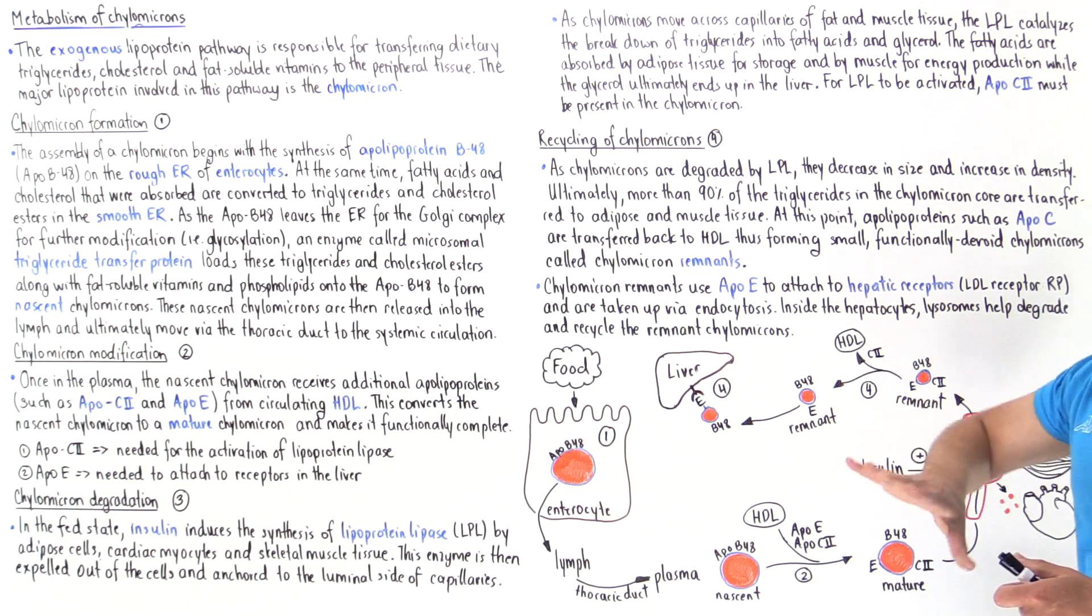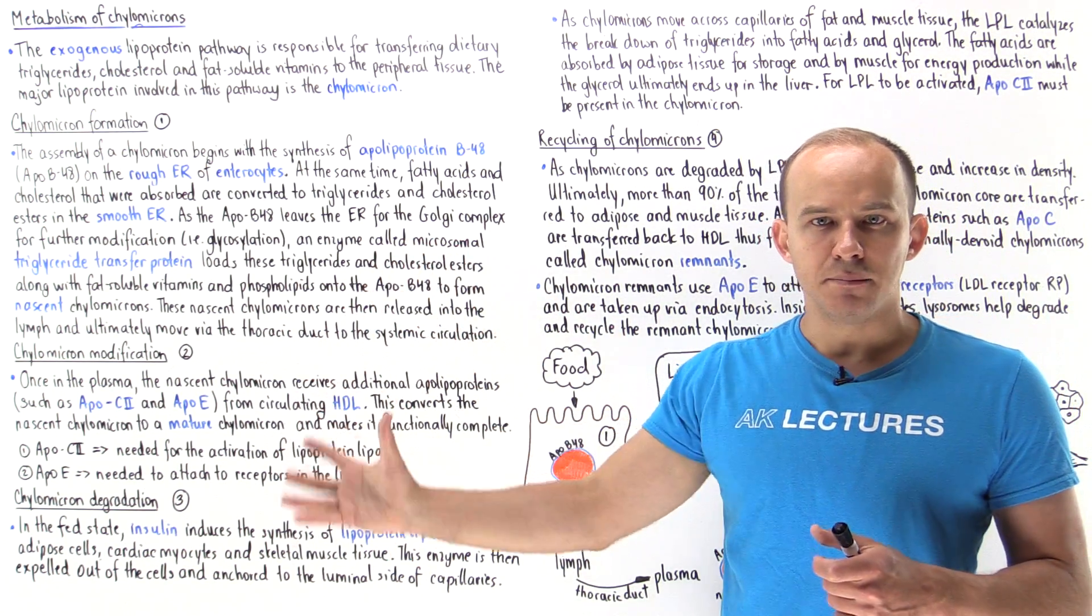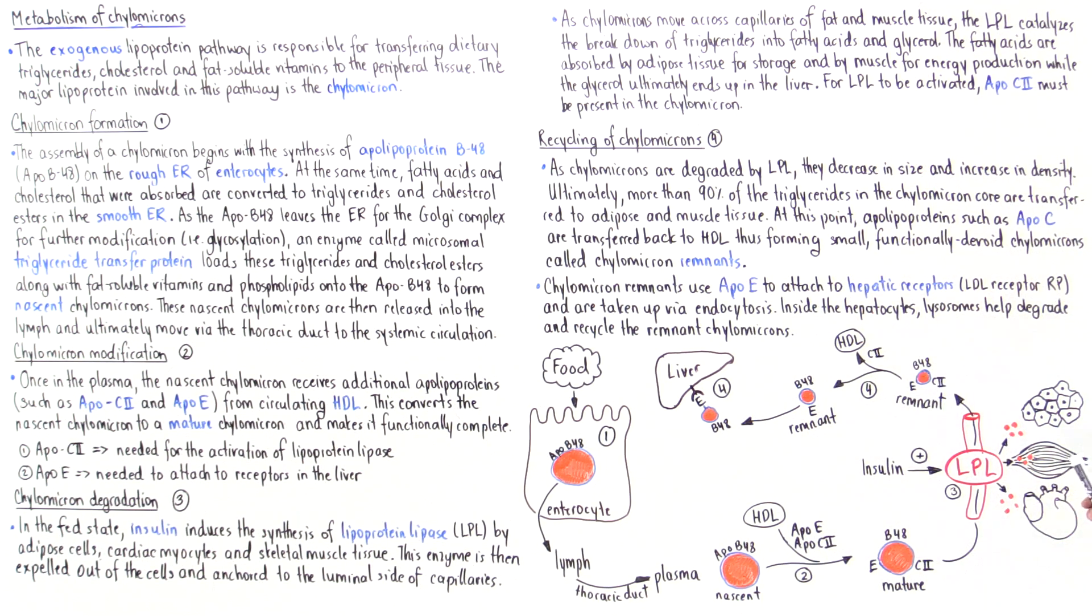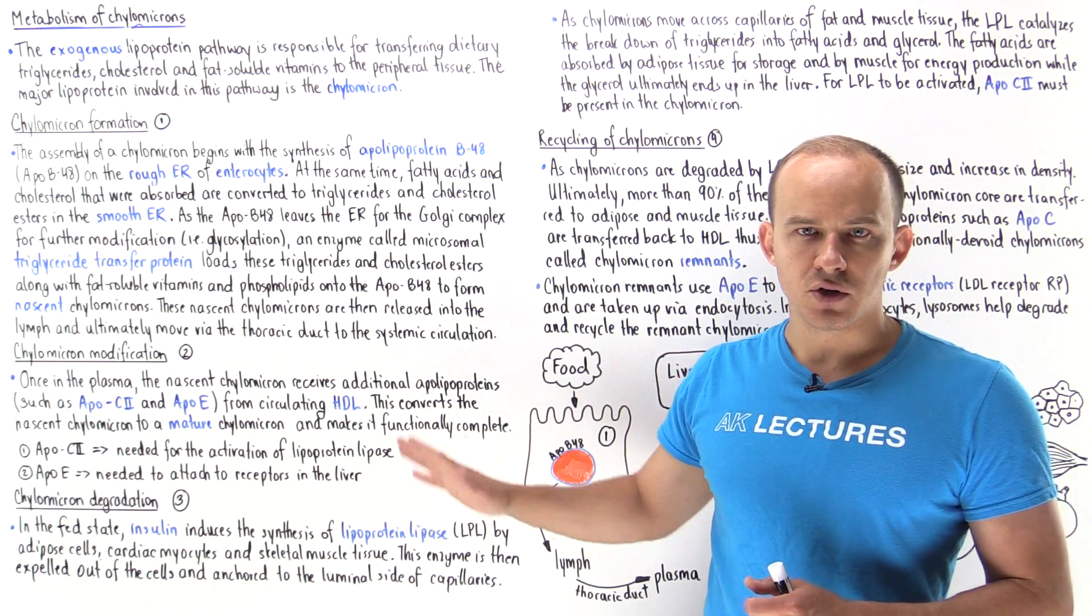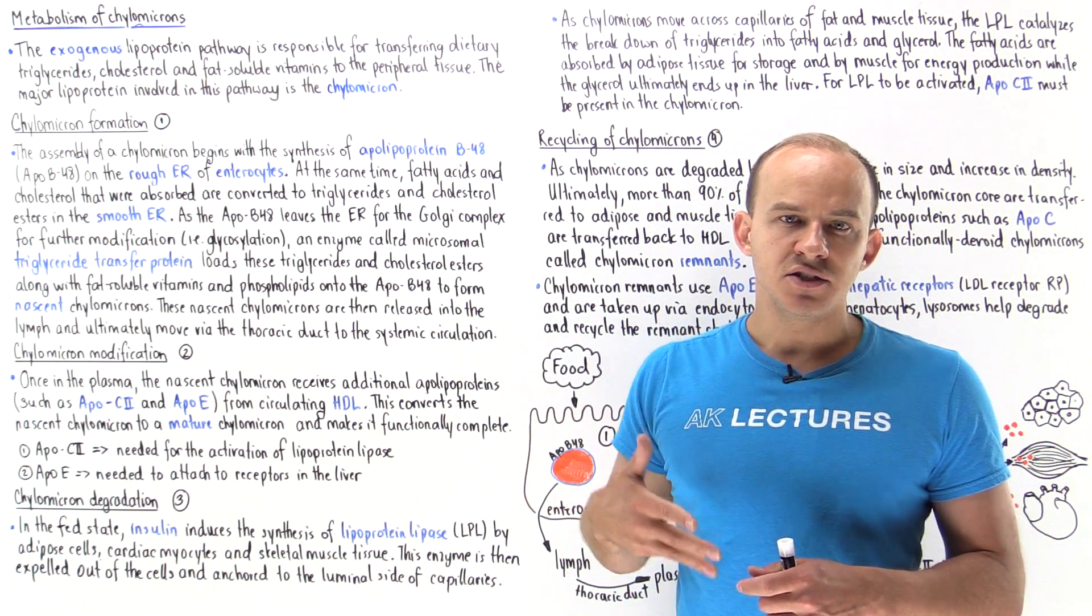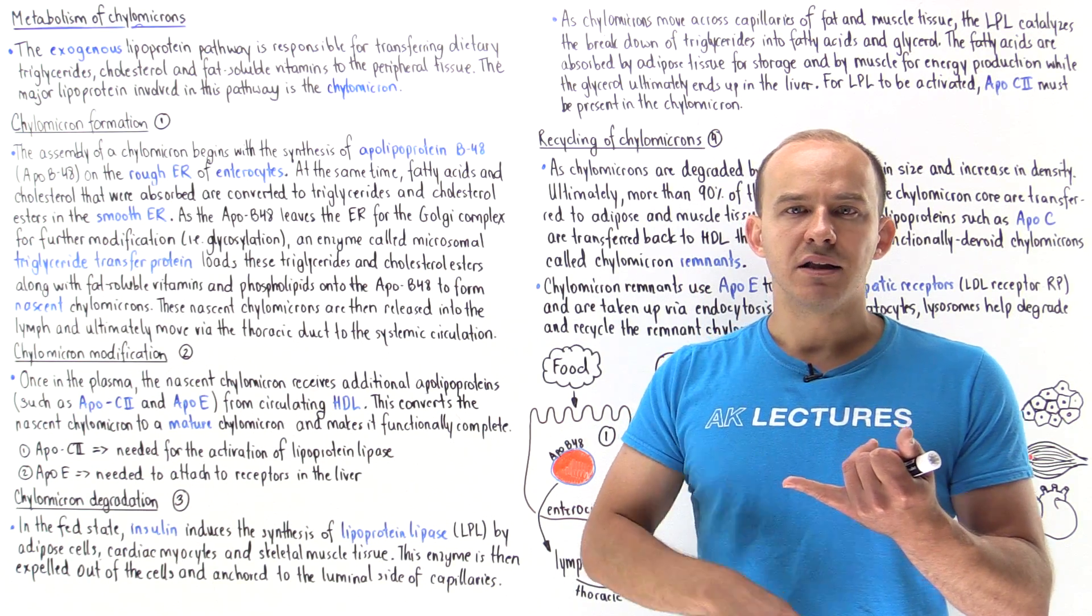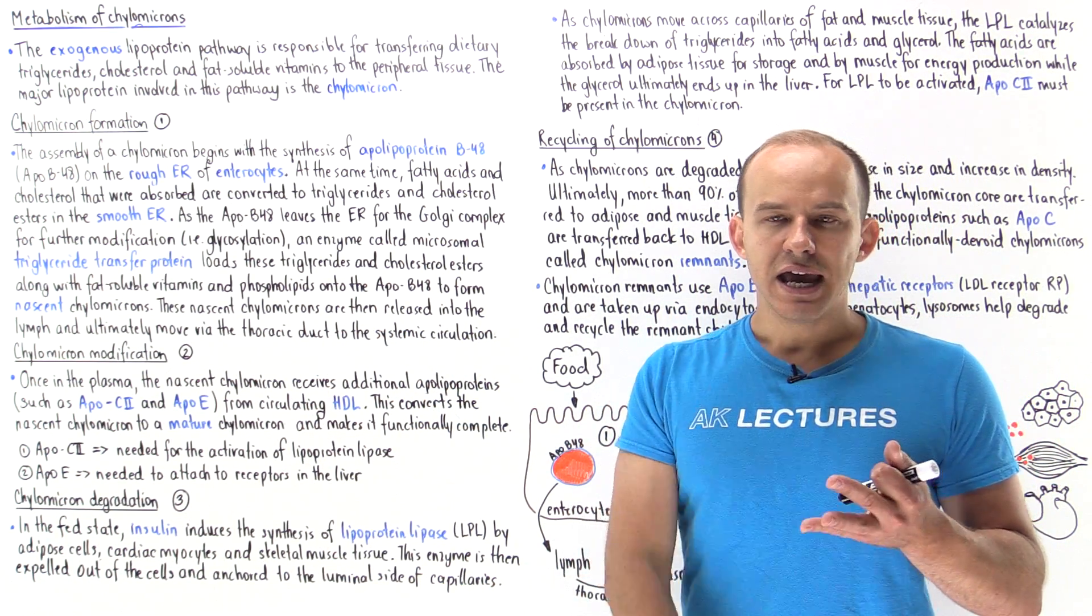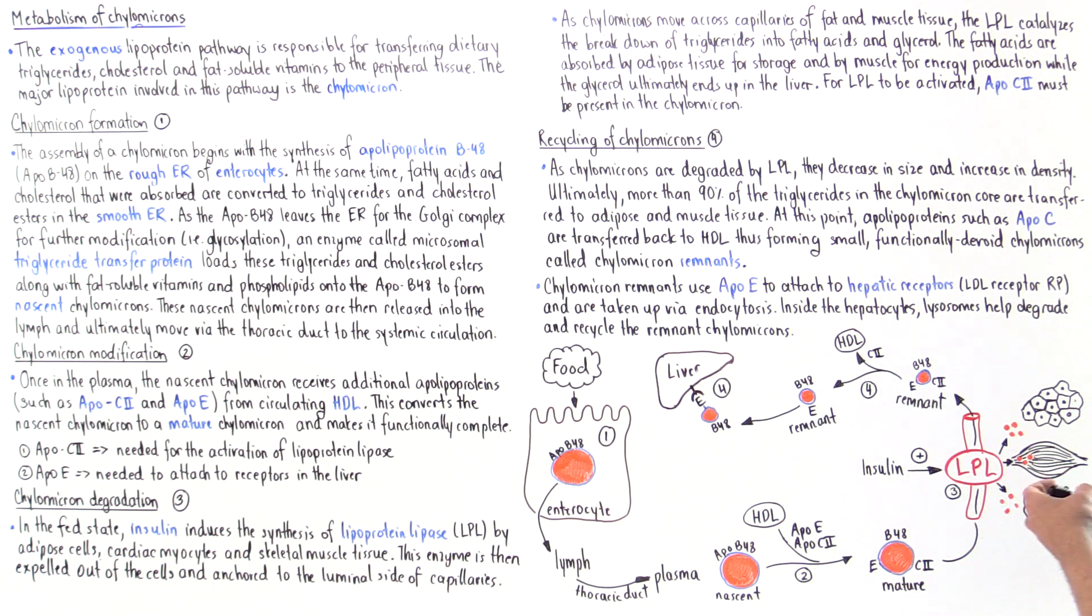Some of the fatty acids end up in the bloodstream, and albumin picks them up and carries them to other peripheral cells of the body. The glycerol that is produced dissolves in the bloodstream and ultimately is picked up by the liver. The liver utilizes that glycerol to form glucose molecules via gluconeogenesis. It can be used in glycolysis or in lipid synthesis.